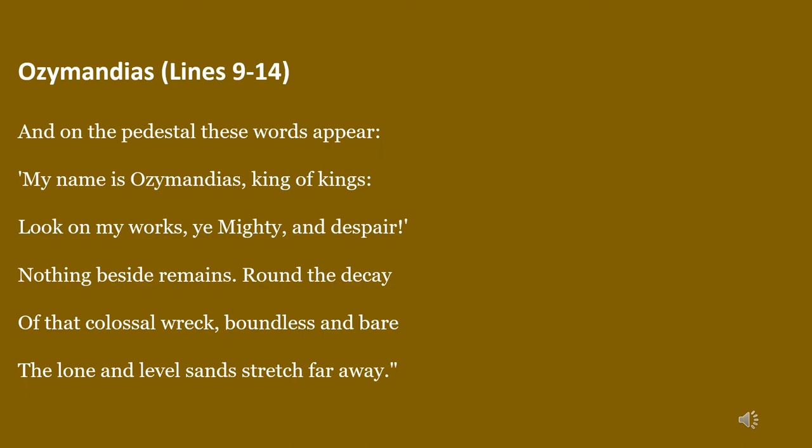These lines are written at the bottom of the statue of King Ozymandias. As we discussed in the first part, there is a statue of King Ozymandias. Ozymandias was an ancient powerful king who ruled about 2100 BC. He was the first soldier-king to invade Asia — a very powerful king in the Before Christ period.